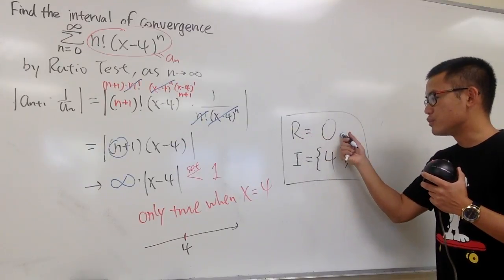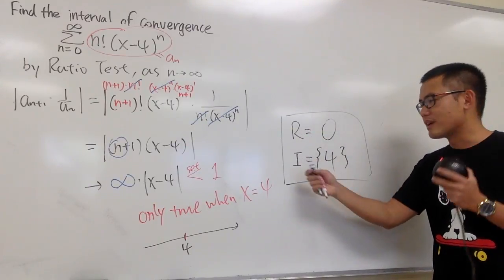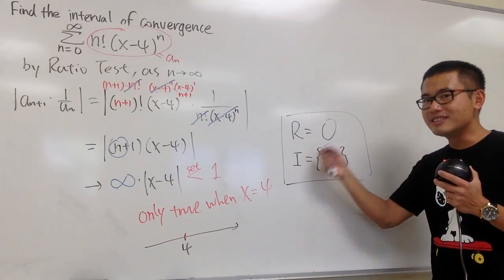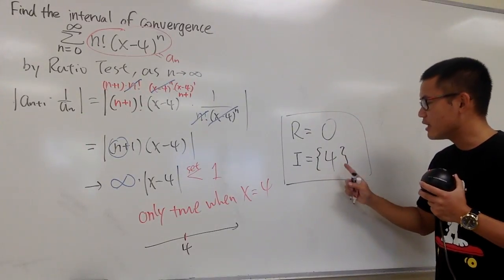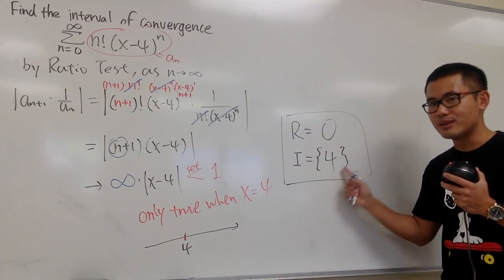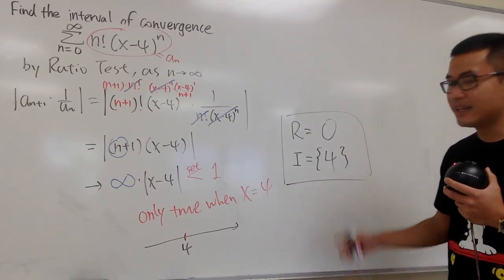Radius of convergence is 0, and technically, the interval of convergence—the convergence set—is just a set of one single number, and the number is the center, which is 4. And that's it.